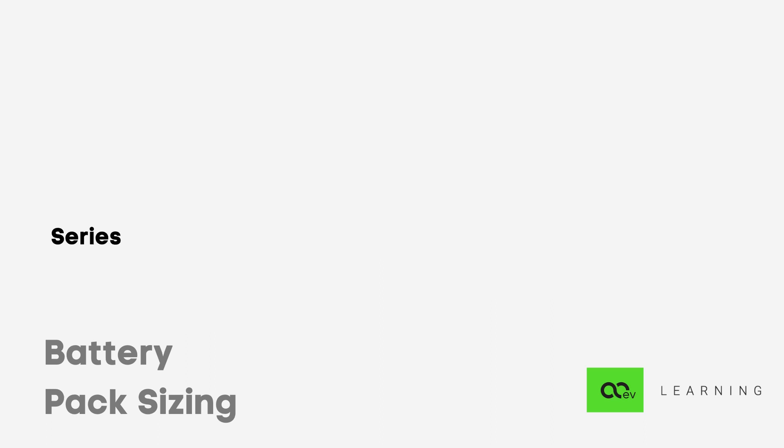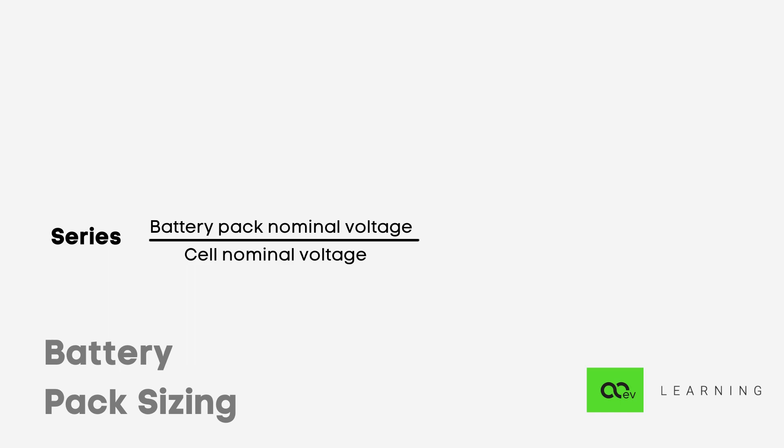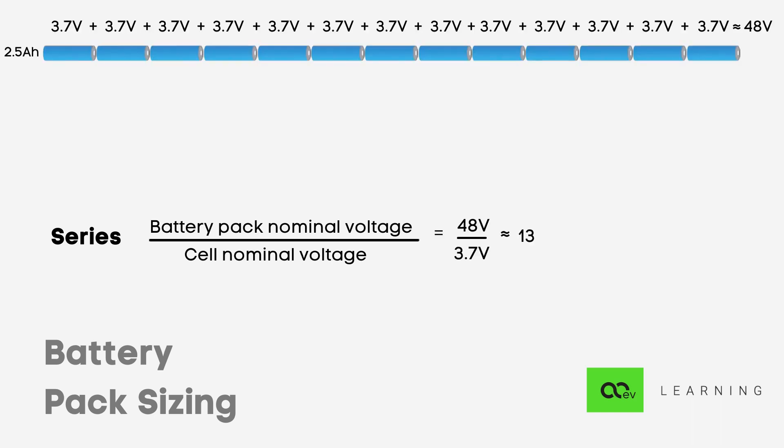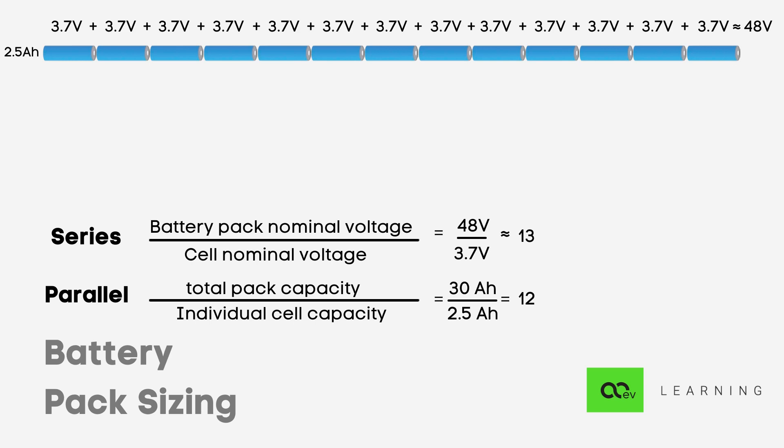To find cells in series, the formula is: number of cells in series = battery pack nominal voltage divided by cell nominal voltage. In this case: 48 ÷ 3.7 = 12.9, rounded off to 13, since we can't have 12.9 cells. So cells in series are 13. To find cells in parallel: total pack capacity divided by each cell capacity — 30 ÷ 2.5 = 12. So there are 12 cells in parallel. The overall pack configuration is 13S12P.